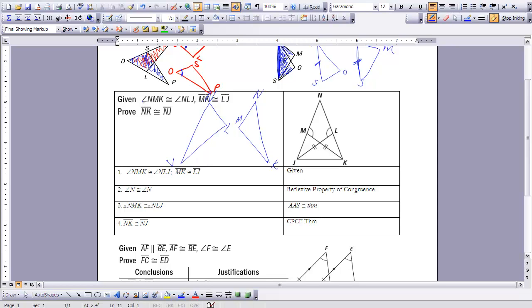We have angle NMK being congruent to angle NLJ. So that's this. Then we had side MK being congruent to side LJ.